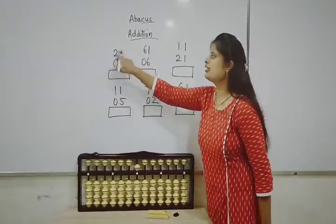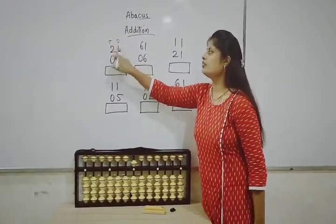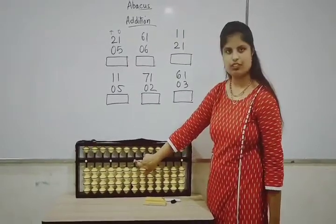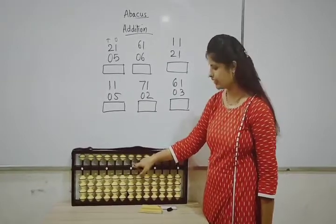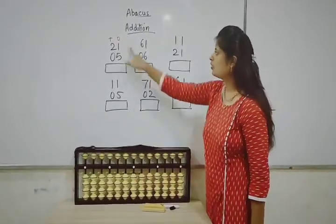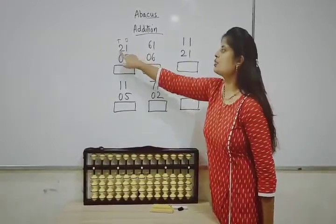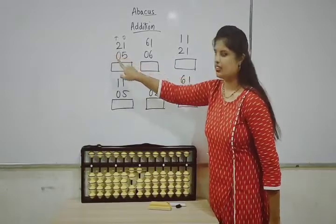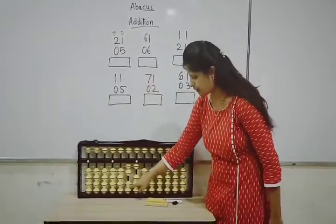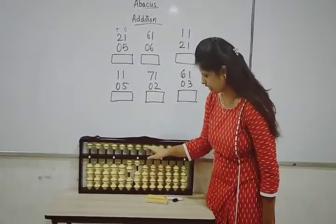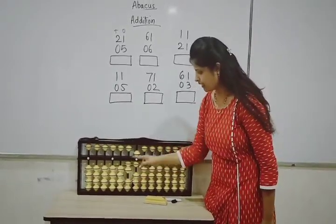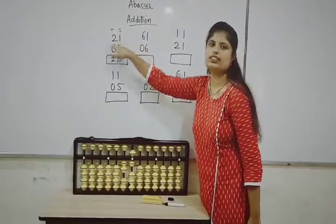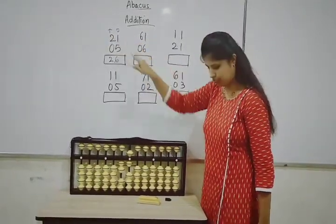Now we will see addition using 2 digits — that is, 1s and 10s place. If the number is 2 digits, we use this middle dot and the rod next to it. For 3 digits, we use 3 dots. So for 2 digits, we use 2 rods. First example is 21 plus 05. No sign means addition. 0 in the 10s place means we do not move any bit there. Then 5 in the 1s place — so now we have 26. Answer is 26. This is how we do 2-digit addition using 10s and 1s.